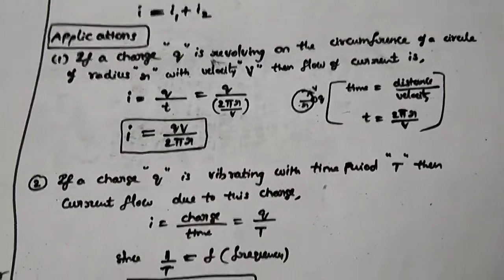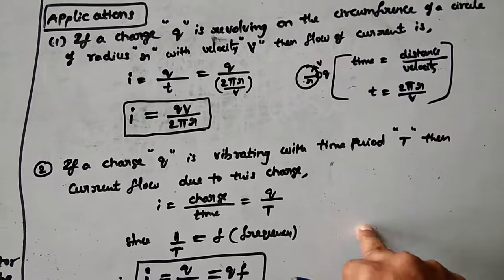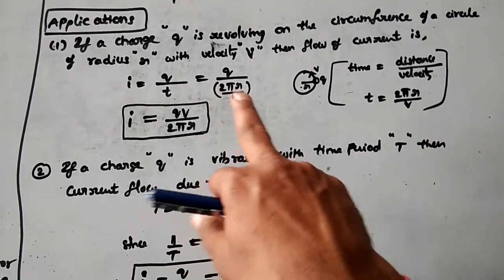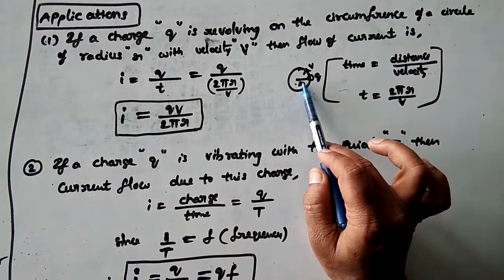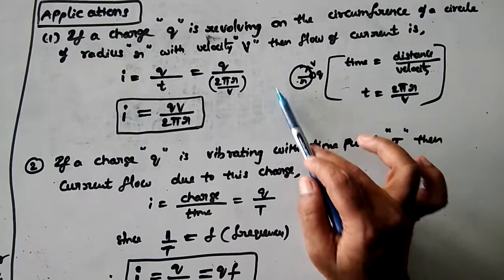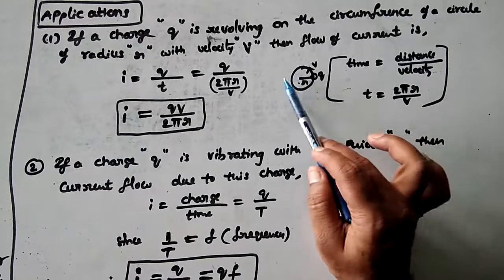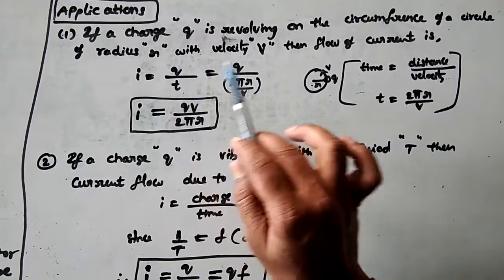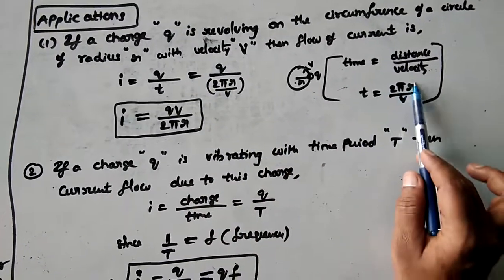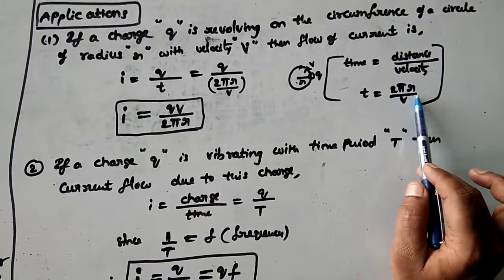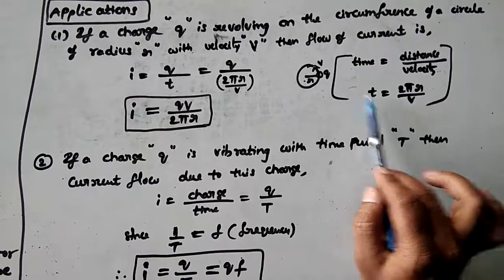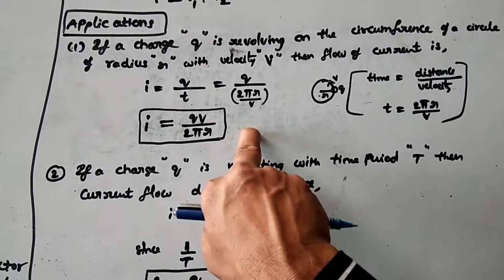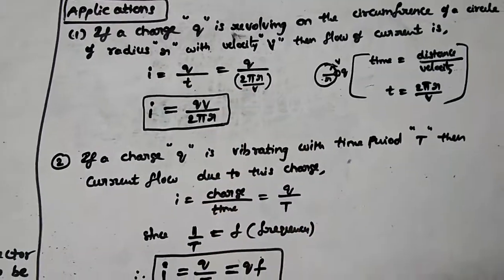Here is an application: a charge q is revolving on the circumference of a circle with velocity v and radius r. The current is I = q/t. Time is distance divided by velocity; for one full revolution the distance is 2πr, so t = 2πr/v. Substituting gives I = qv/2πr. You may get a numerical question based on this model.